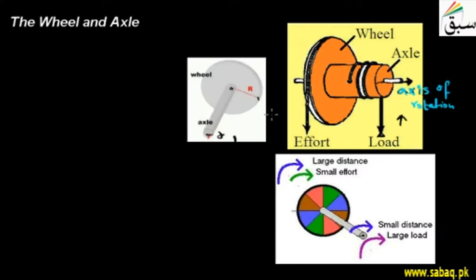Now, if we look at the mechanical advantage — what is the mechanical advantage of wheel and axle? If we look at simple daily life examples or applications, we can look at drawing water from deep wells. In construction, where we have to put heavy loads to a height, we use the wheel and axle. In this case, we need only a little effort to move heavy loads.